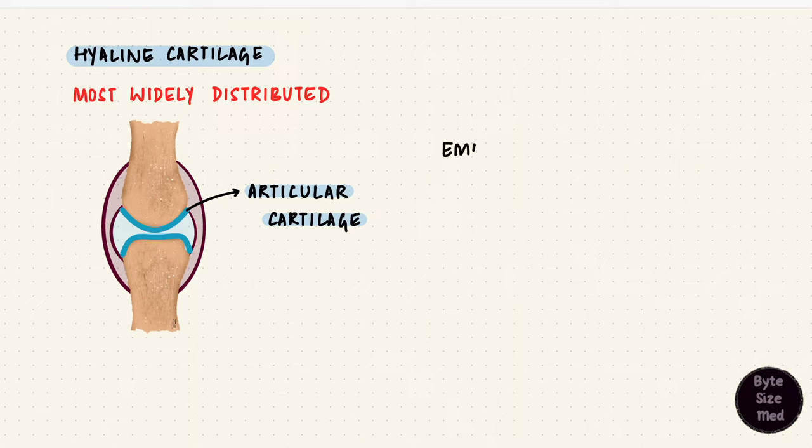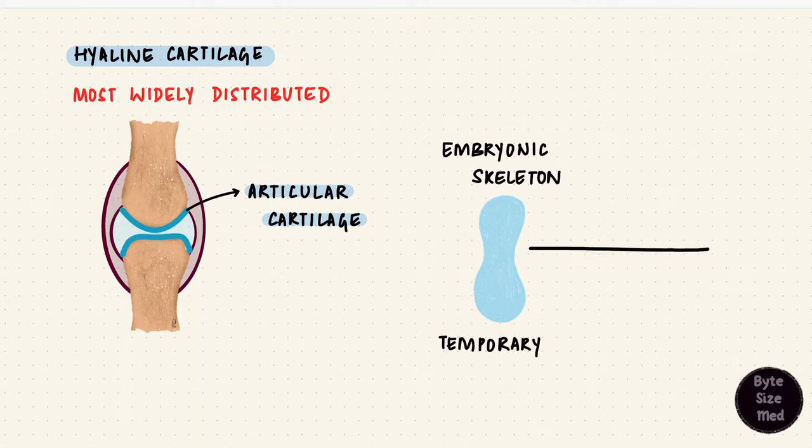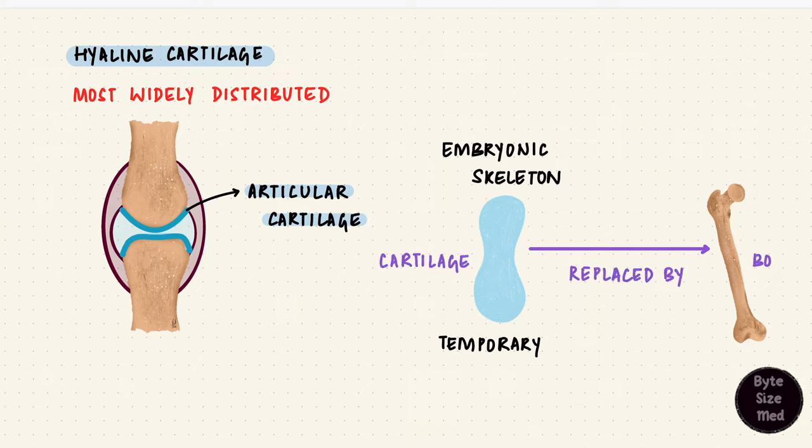The embryonic skeleton is actually hyaline cartilage first. It forms a temporary skeleton because it's going to be replaced with bone. That process in which cartilage gets replaced by bone is called endochondral ossification. Ossification is how bones develop. This is one way by which most bones in the body develop, from a cartilaginous template. That's endochondral ossification. That's why it's got chondro in it.